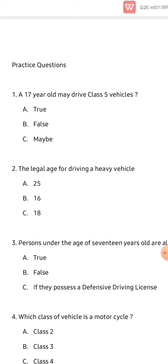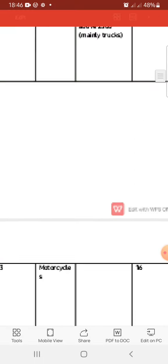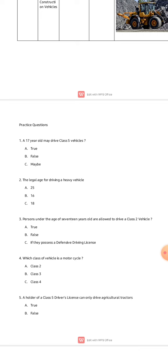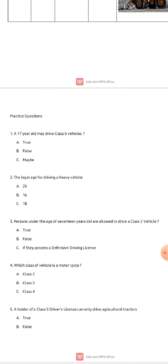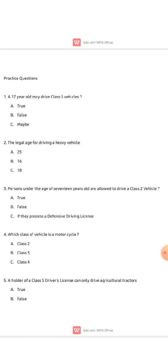Question two: the legal age for driving a heavy vehicle — is it 25, 16, or 18? Remember, heavy vehicles are class two. To attain a class two license you need to be 18 years or above. Please write the answer you think is correct and check it against mine. The correct answer for number two is 18.